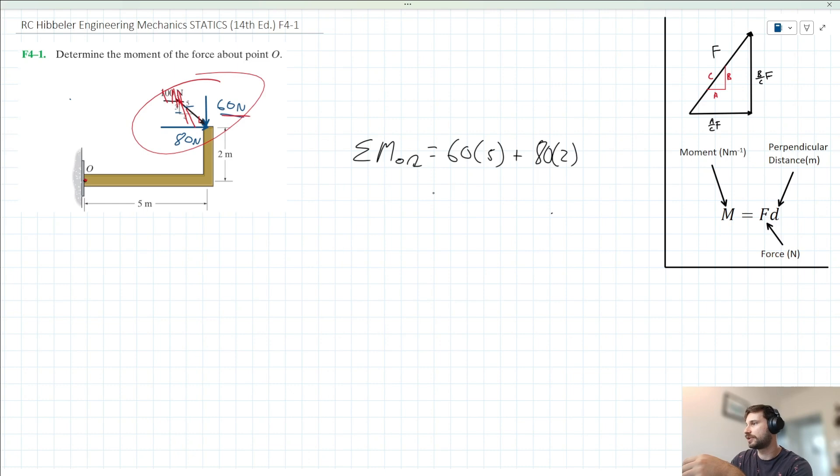Now, we can do this in our heads. 60 times 5, that gives 300. 80 times 2, that gives 160. So we can say then that the total clockwise moment here is going to be 460 Nm, and evidently it's acting clockwise. So let's just add that to our notes here, acting clockwise.